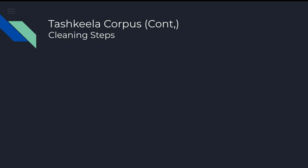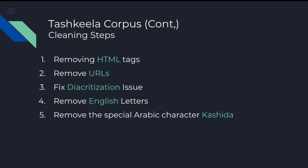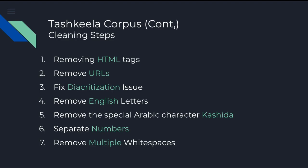To clean up Tashkila, we did the following steps. As some files had HTML tags, we used BeautifulSoup to remove them. We used Regex to remove URLs, fixed the diacritization issues mentioned in the previous slide, removed English characters, removed the special character kashida as it only has a calligraphic effect which does not affect diacritization, separated numbers that are stuck to Arabic words, and compressed multiple whitespaces between any two words into a single space.